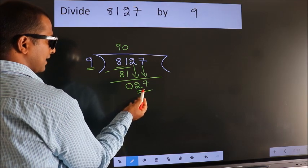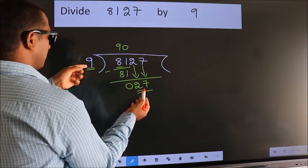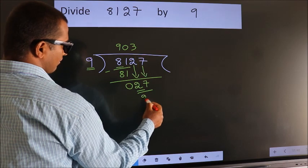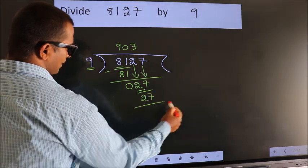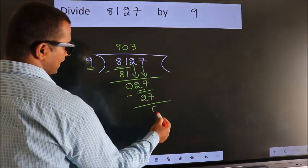When do we get 27 in the 9 times table? 9 threes are 27. Now we subtract. We get 0.